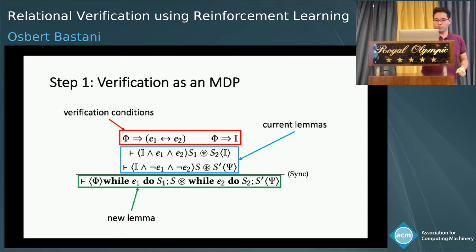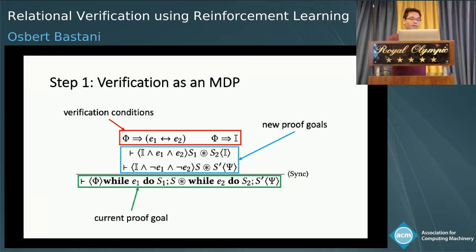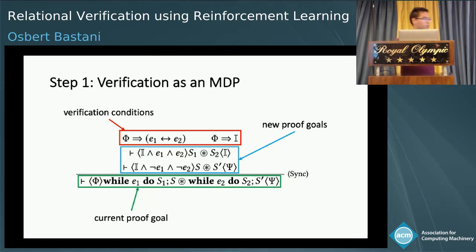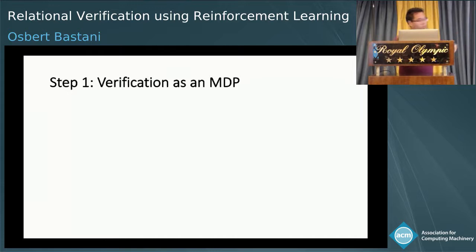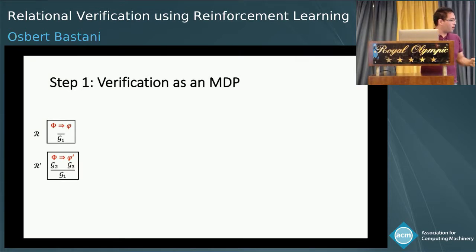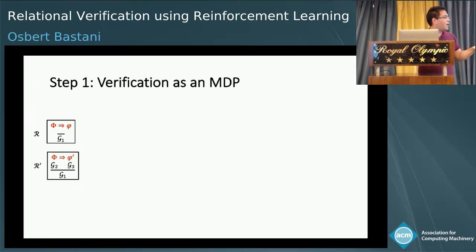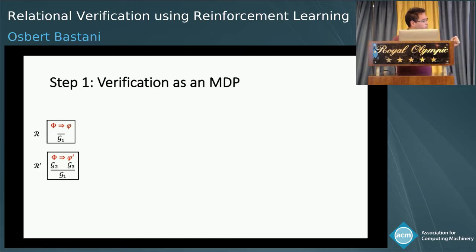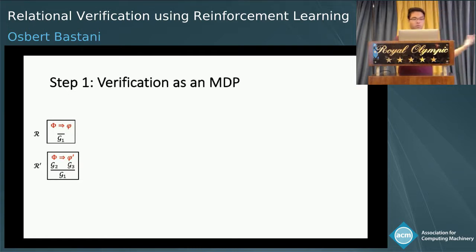Assuming that both conditions in the antecedent hold — both the verification conditions and the current lemmas — we can derive the consequent, which is a new lemma proven to be true. We're actually going to do the search in the backwards direction, starting from what we want to prove — the current proof goal — and then applying an inference rule to obtain a new set of proof goals and some verification conditions. To show this with a toy example: suppose we have two inference rules R and R prime. Both have a verification condition shown in red, both have the current proof goal G1, which is some relational property. R doesn't generate any new proof goals, while R prime generates two new proof goals G2 and G3.